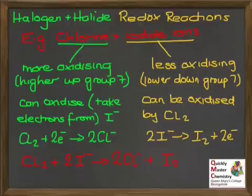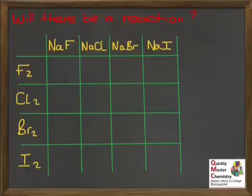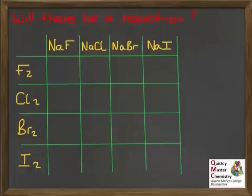This is a direct competition for electrons, with chlorine being more oxidising, winning the battle, and taking electrons from iodide ions to make chloride ions and leave element iodine. To recap: a more oxidising halogen — one higher up group 7 — can react with and oxidise the ion of a less oxidising halogen. So, for any combination of a halogen reacting with a halide ion, we ought to be able to predict whether or not a redox reaction will occur.